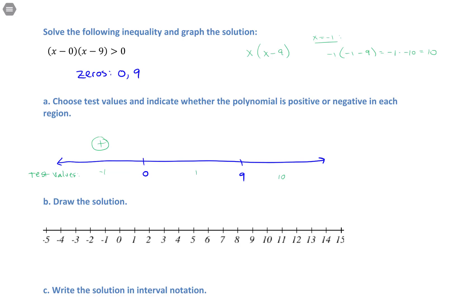At positive one, I would be working with one times one minus nine. This is positive one times negative eight, so everything on this interval will be negative.